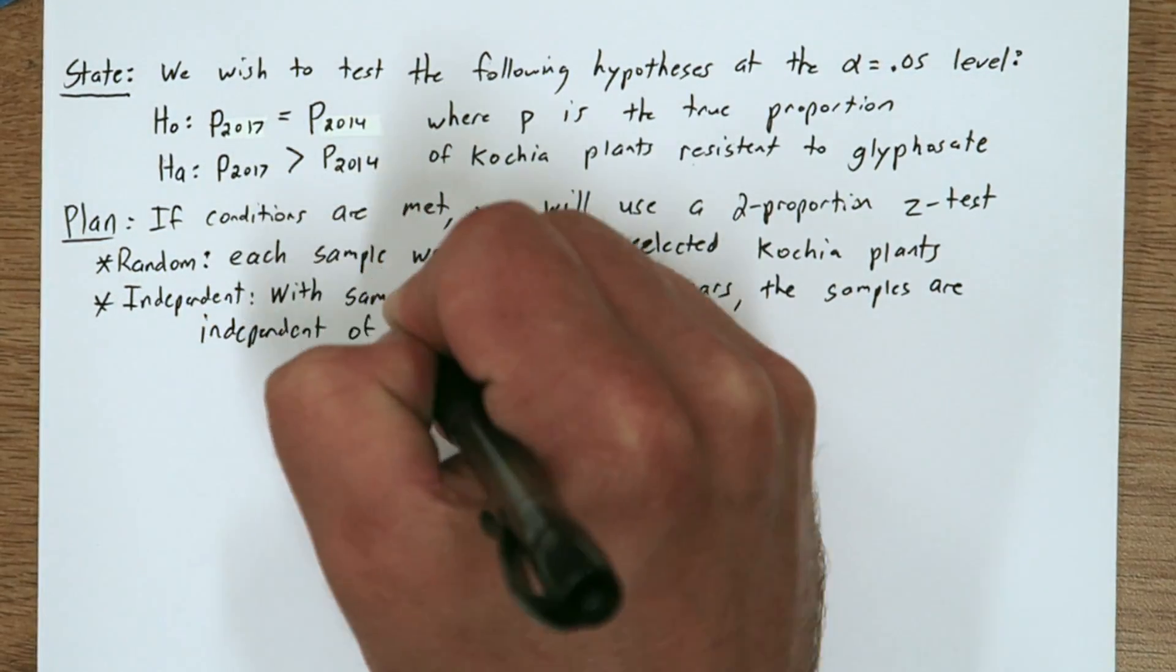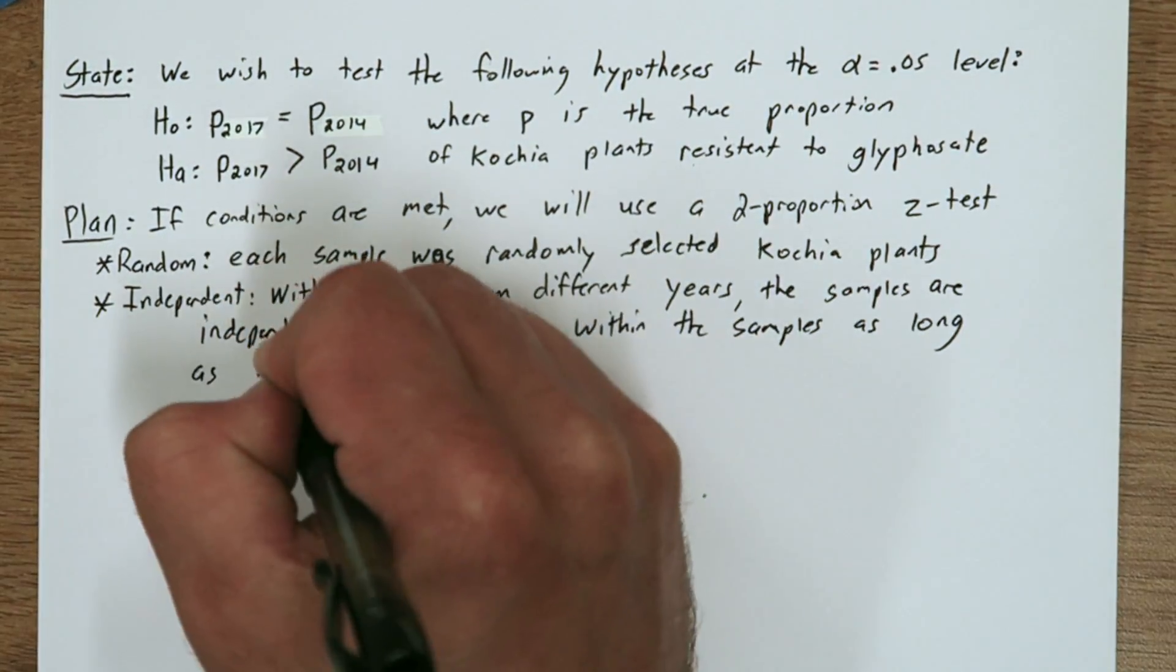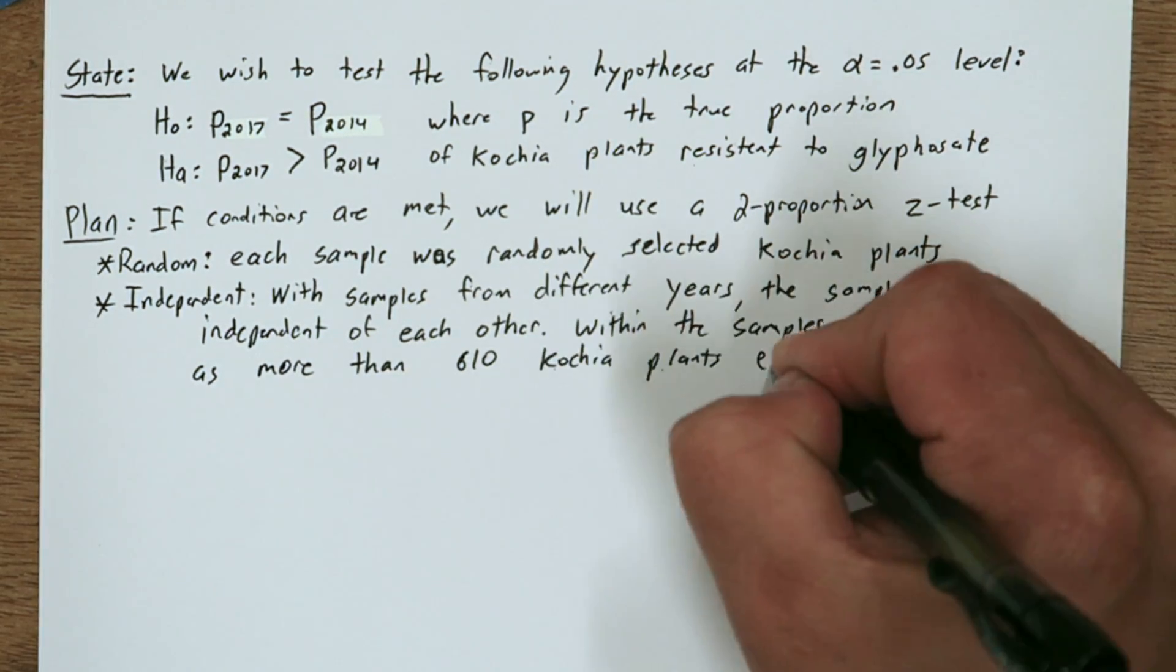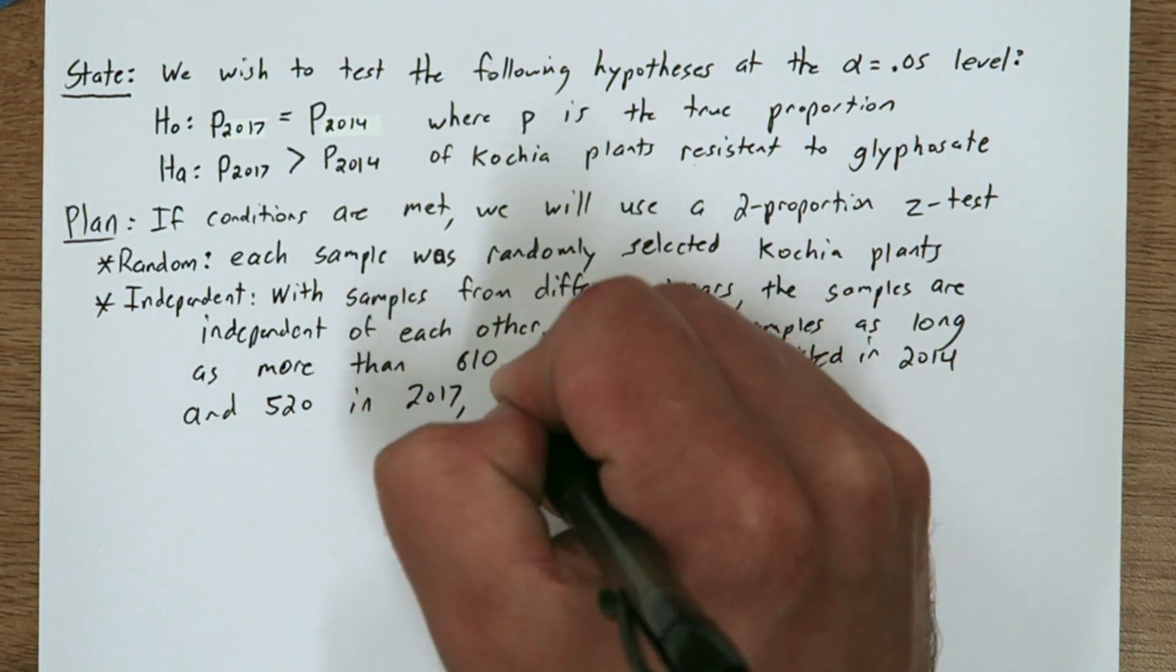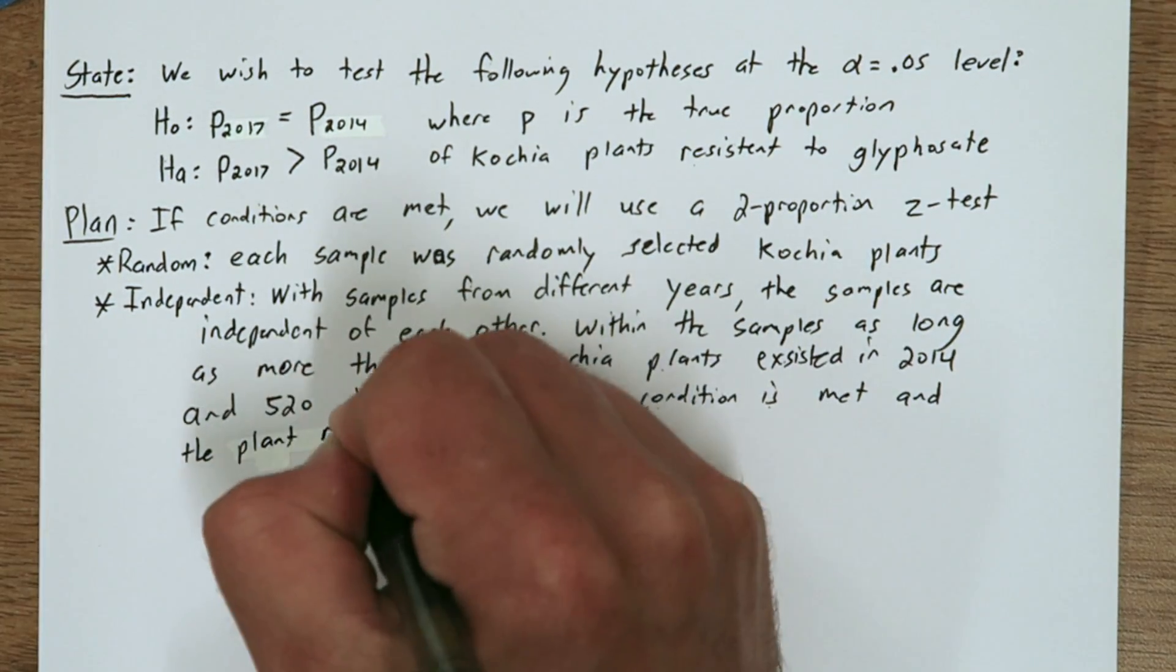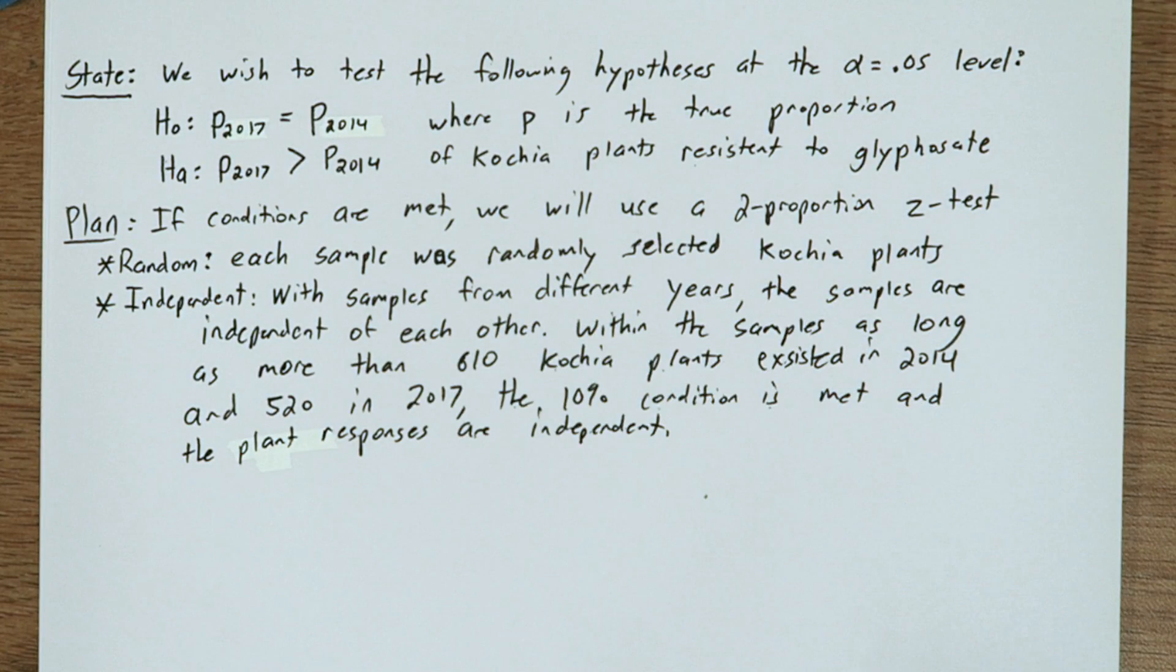We also need to check that the plants within the samples are independent. As long as more than 610 Cochia plants existed in 2014 and 520 in 2017, the 10% condition is met and the plant responses are independent.